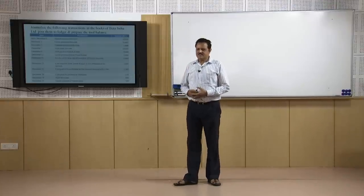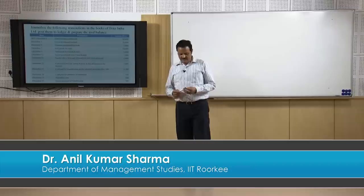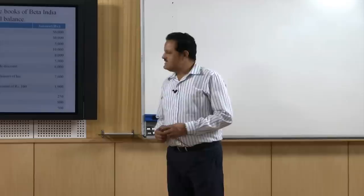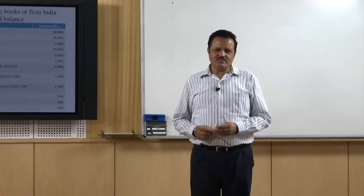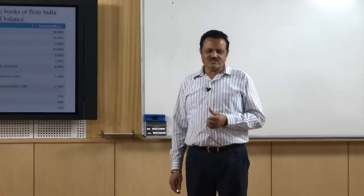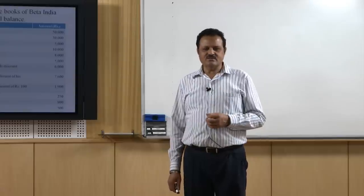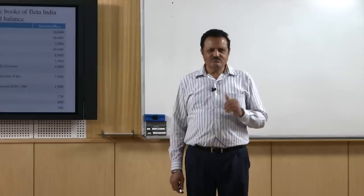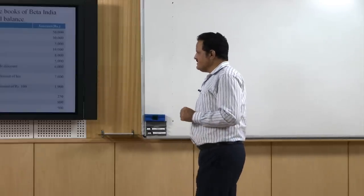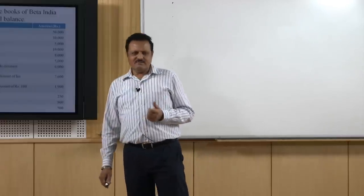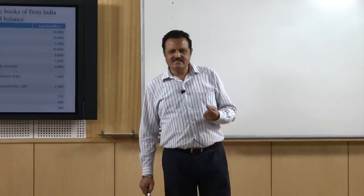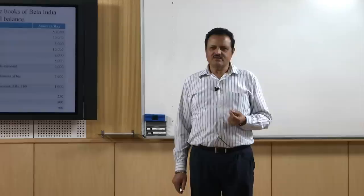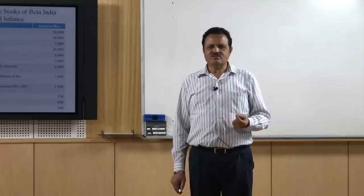Welcome all. Dear students, in my previous lecture I was talking to you about the accounting process. There I shared with you that in the accounting process we have different steps: the first step is the transaction, then second is the journal, then the transactions go from journal to the ledger, ledger to trial balance, trial balance to profit and loss account, and last is the balance sheet. Now we will learn how to prepare the balance sheet and financial statements, and the first step is we need some transactions to be recorded in the first or original book of accounts, called the journal.